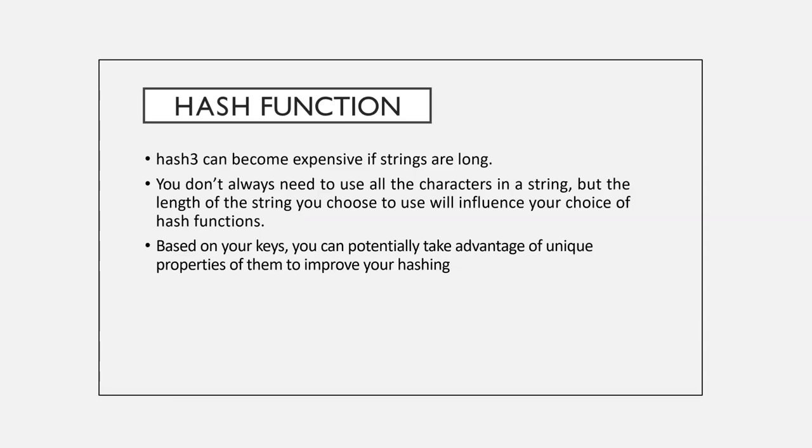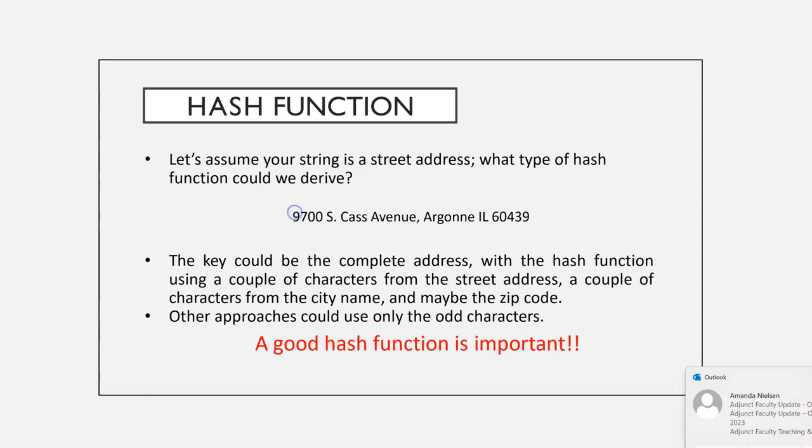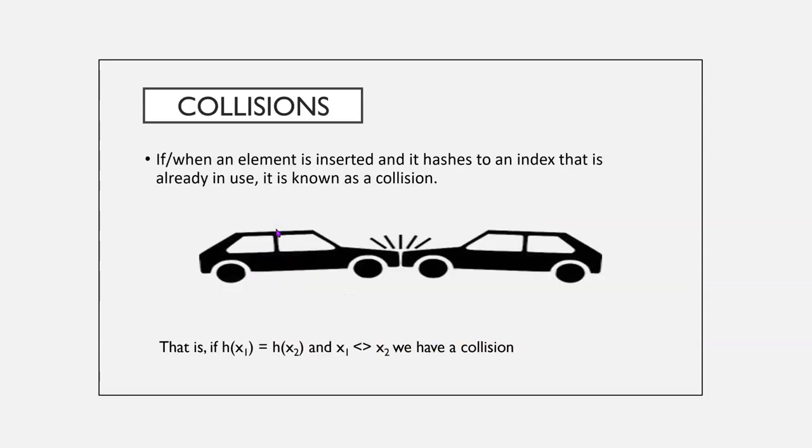Based on your keys, you can potentially take advantage of unique properties of them to improve your hashing. Let's assume your string is a street address, or a type of hash function could be derived. Well, the key could be a complete address with the hash function using a couple of the characters from the street address, a couple from the name, etc. Other approaches could only use the odd characters. The end result here is having a good hash function is important.